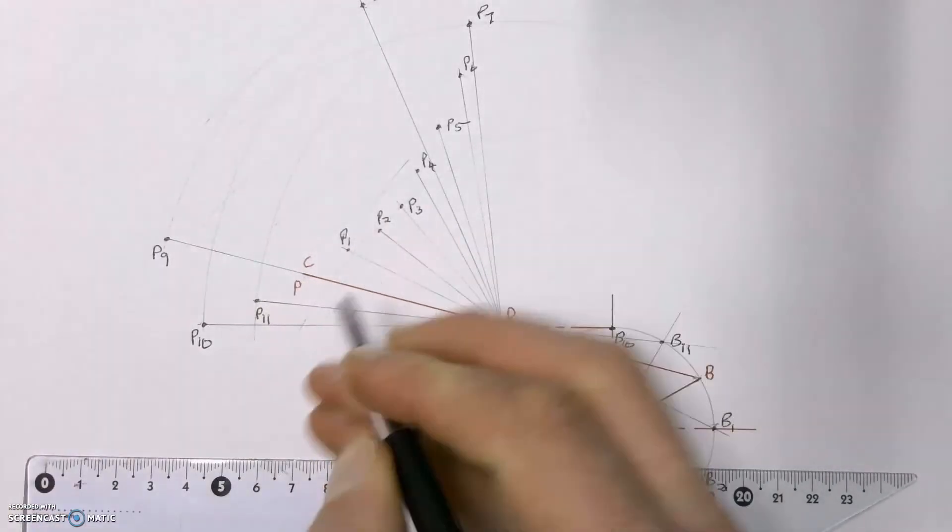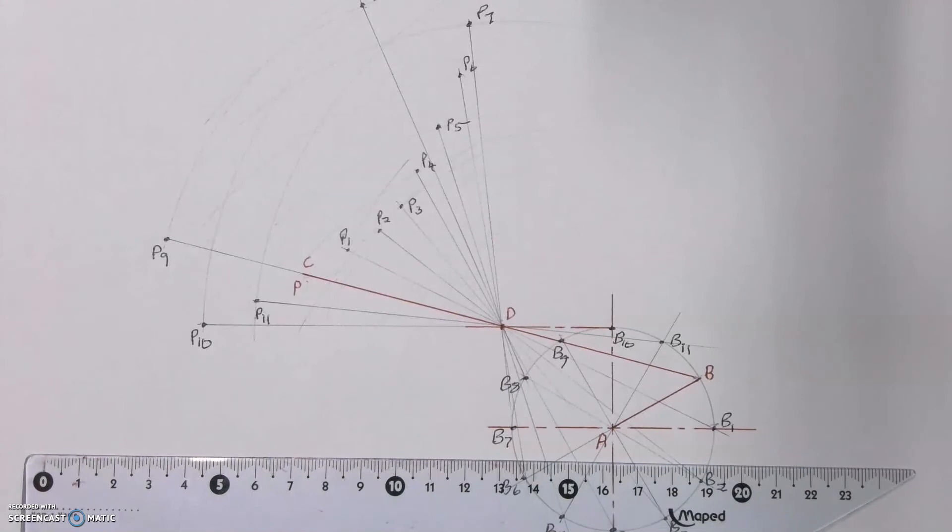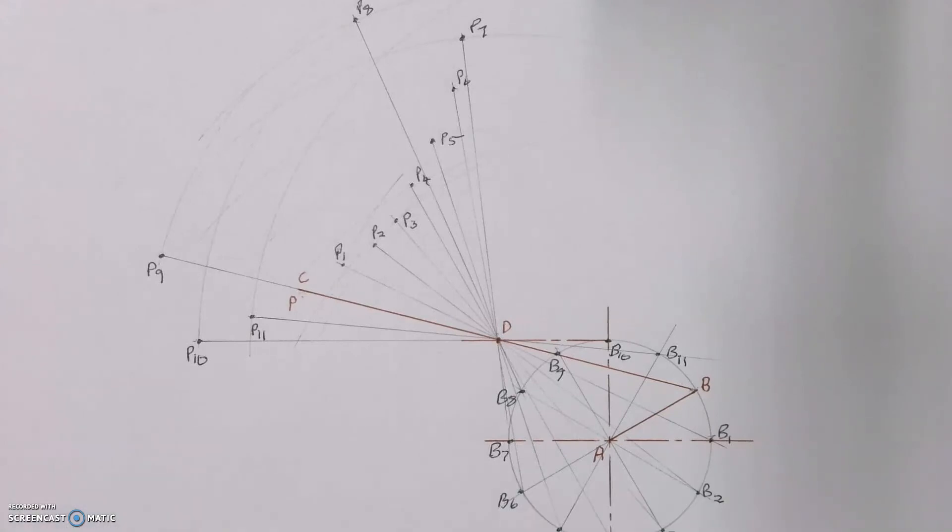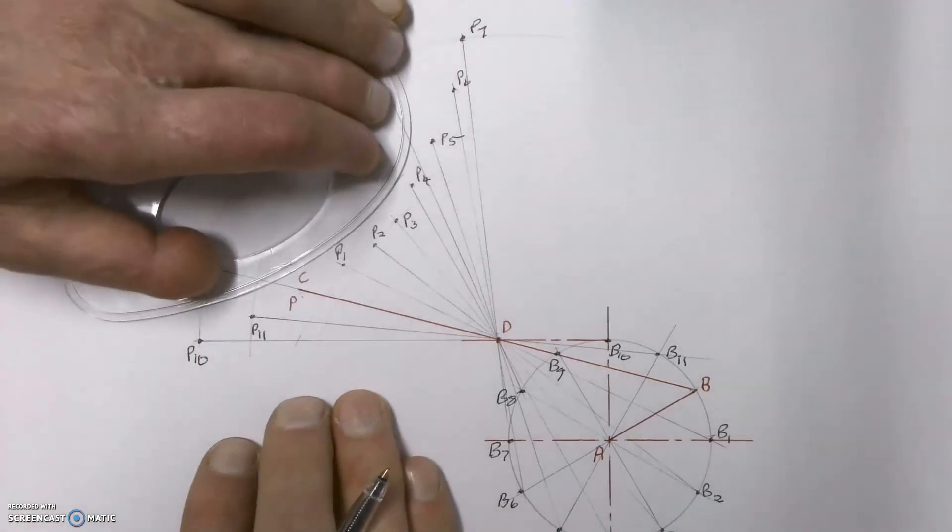It finishes off back at point P again. Now what we have to do is with our French curve we're going to join all of those points up with our French curve to form the locus of point P.